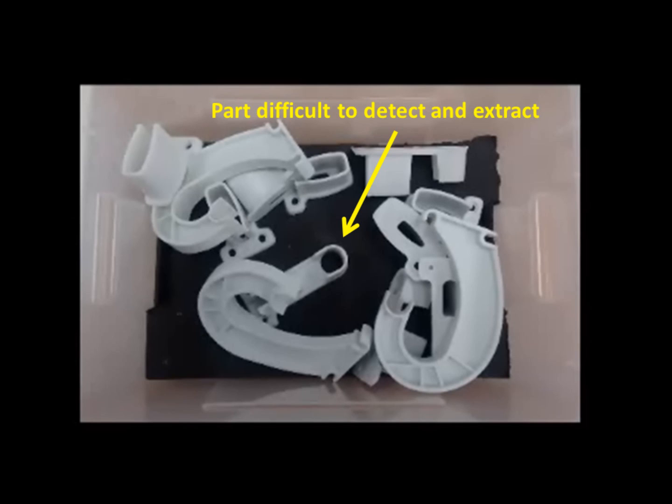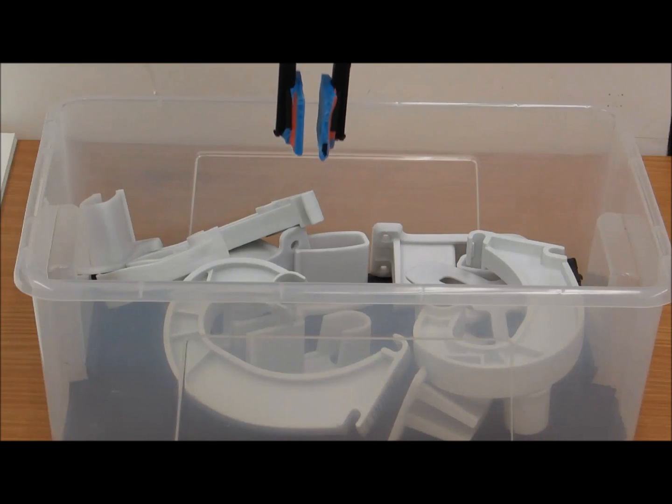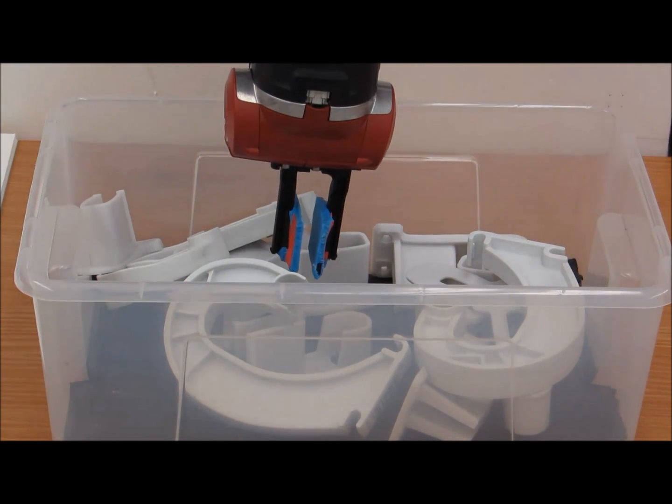If the human is unable to help, then RoboSAM tries to randomly move parts in the bin to make the desired part more visible and easier to detect.